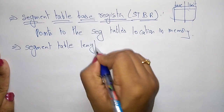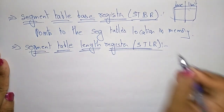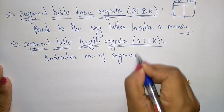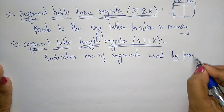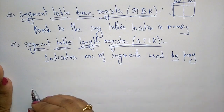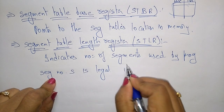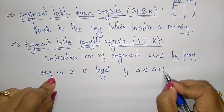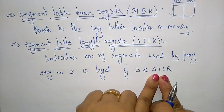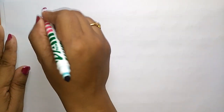The Segment Table Length Register, or STLR, indicates the number of segments used by the program. The segment number S is legal whenever it is less than the STLR value. Whatever segment you are storing in the table, that segment number should be less than the total segment table length register value.